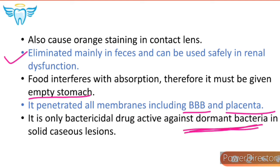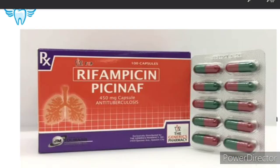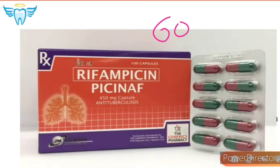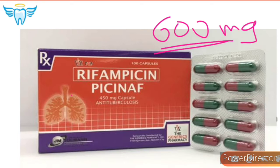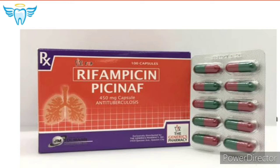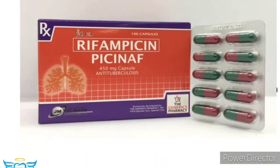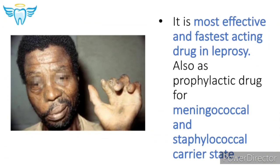Rifampicin is the only bactericidal drug which is active against dormant bacteria — meaning bacteria in an inactive state in caseous lesions. So it is the only bactericidal drug among the anti-tubercular group which is active on caseous lesions. The maximum dosage of rifampicin is 600 mg per day. Here you can see the 450 mg capsule; depending upon the stage of tuberculosis the clinician prescribes it, but the maximum dose is 600 mg.